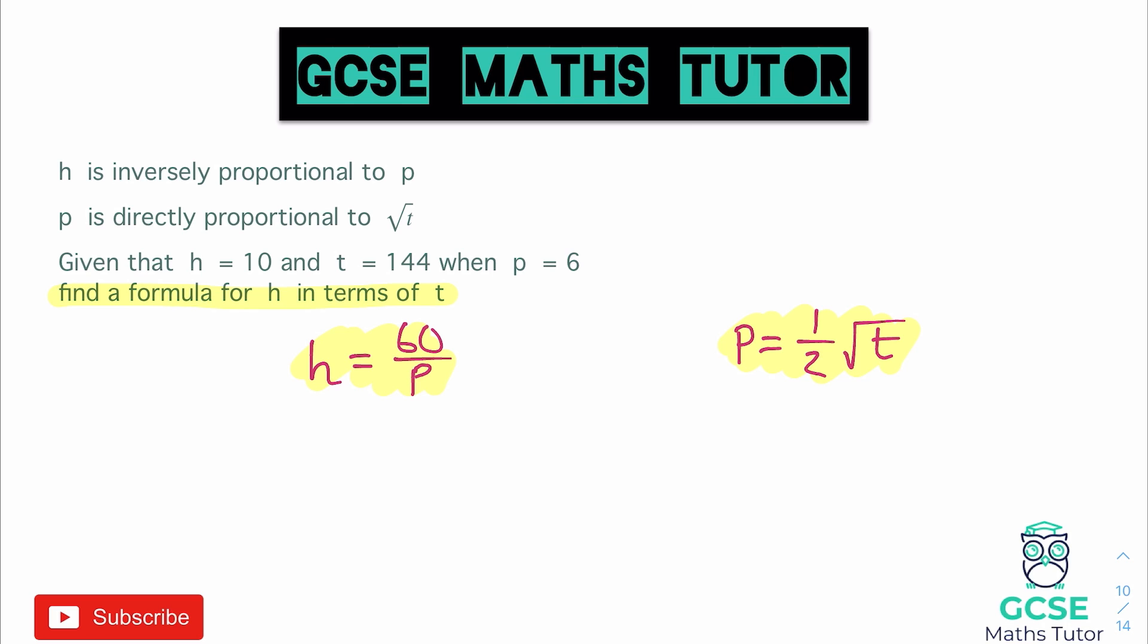Well if p is equal to a half root t, what we can do is take that half root t and just put it there where the p is. As they're both equal. It's like saying if p equals 5, well you'd put p underneath 60 and you'd get a value of h. But this says p is equal to a half root t. So if we put it in we'd just get h equals 60 over a half root t.